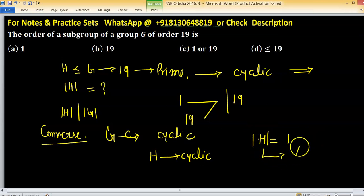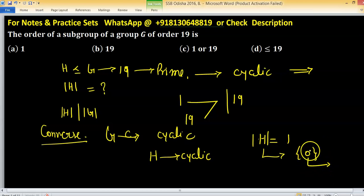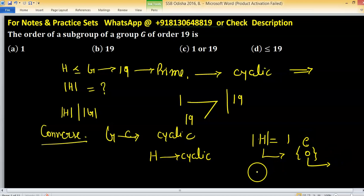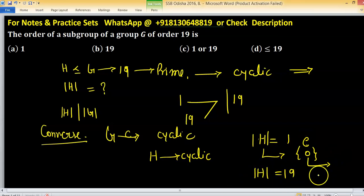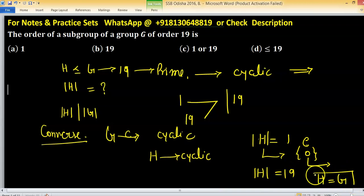The group is cyclic, so what are the possibilities? If the order of H is 1, then H is nothing but the trivial subgroup — the identity element of G. If the order of H is 19, then H is nothing but G itself, treated as a subgroup.